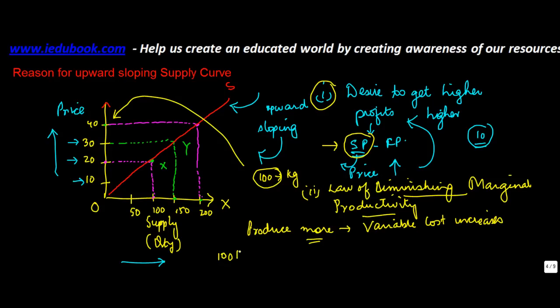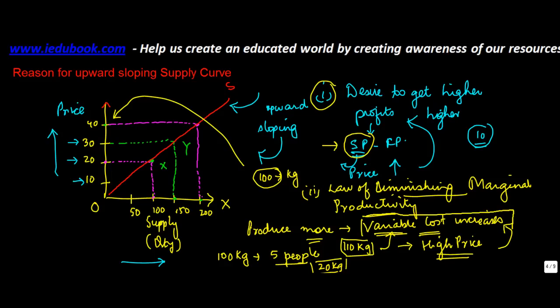So let's say I was able to produce 100 kg by employing 5 people, so each person was giving me productivity of 20 kg. If I have to produce 110 kg, then I might need to add on some variable costs. To meet these variable costs, what I will do is I will sell only at high price, which gives me enough profits so that I can cover these and still make some profit. So whatever is the rise in the cost of production because of increased production, unless and until that is met, I would not be tempted to produce more.